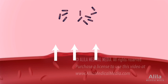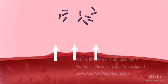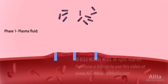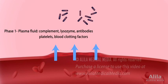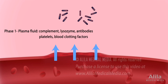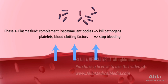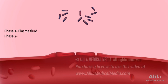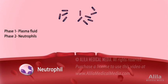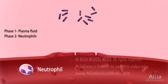The infiltration of blood components into the injured tissue occurs in three phases. The first phase is the exudation of plasma fluid containing various antimicrobial mediators, platelets, and blood clotting factors. These factors can destroy microbes and stop any bleeding that may have occurred. The second phase is the infiltration of neutrophils, the major phagocytes involved in first-line defense.